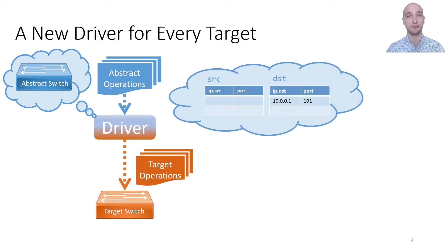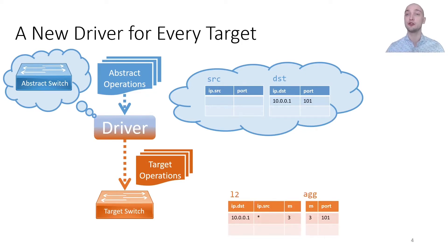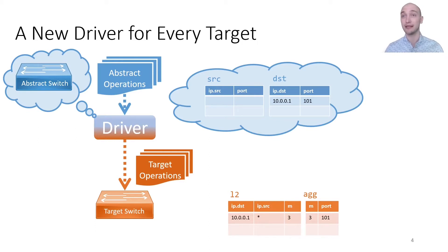For example, let's say that we have a two-stage abstract pipeline where each table sets the output port based on the IP source or destination address, respectively. And we want to map operations on this pipeline to a target two-stage pipeline that first matches on both the source and destination addresses in the L2 table, and then sets a metadata field that is subsequently matched on in the aggregation table to determine the output port.